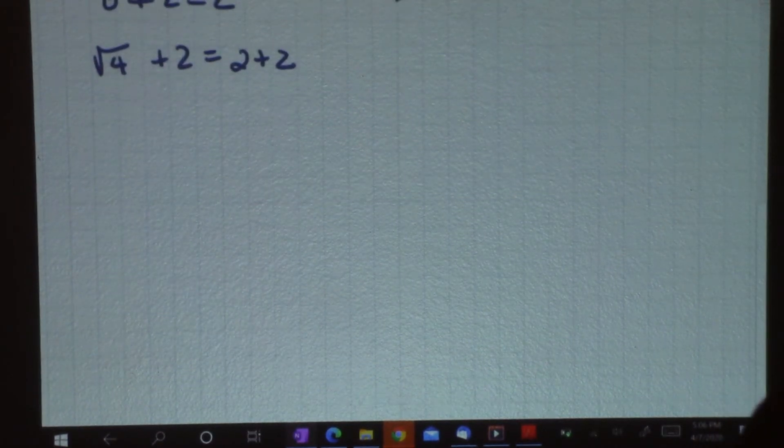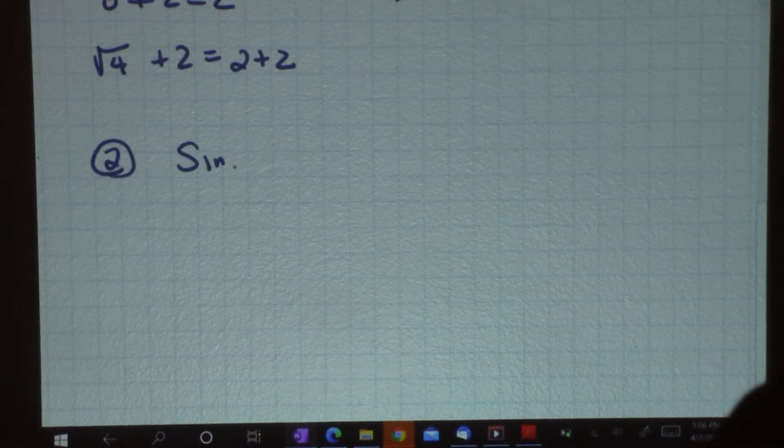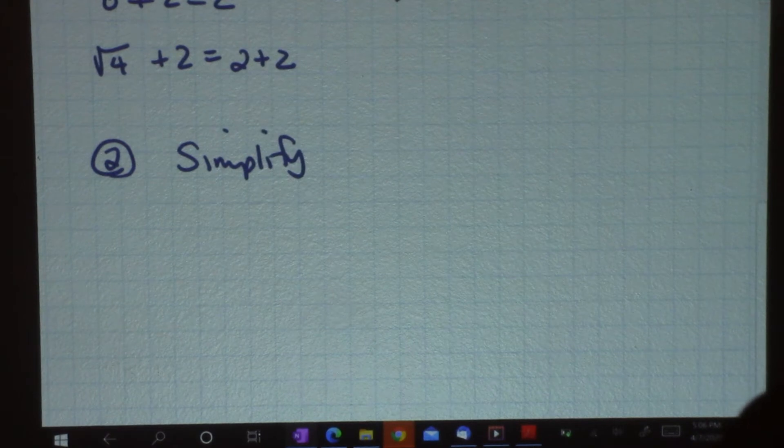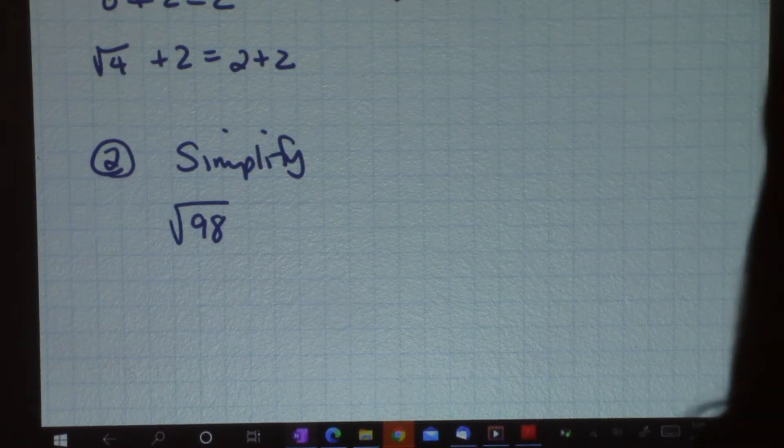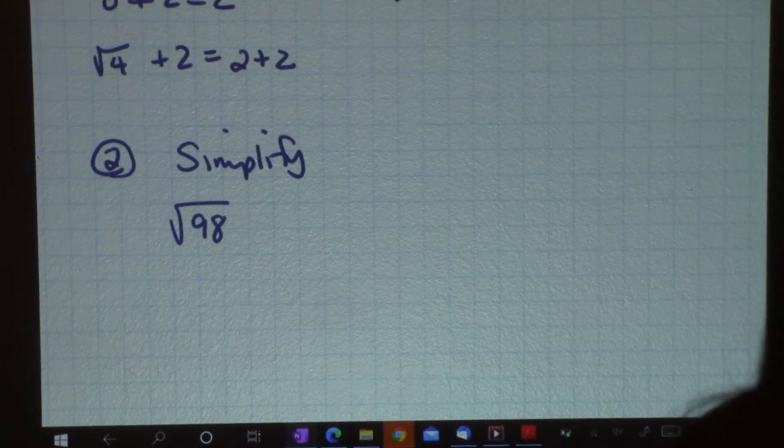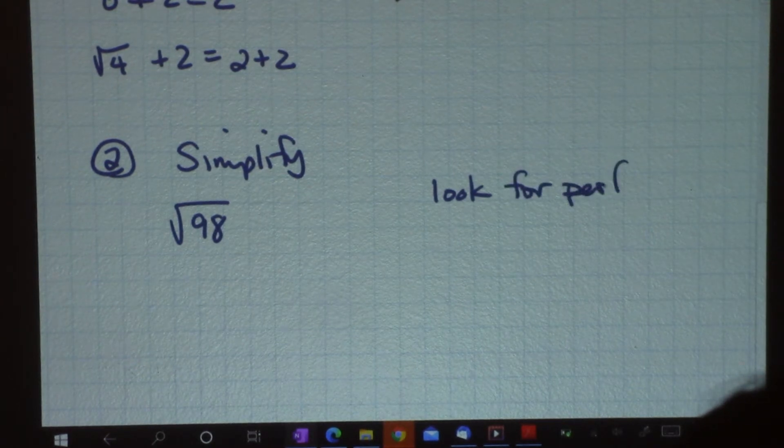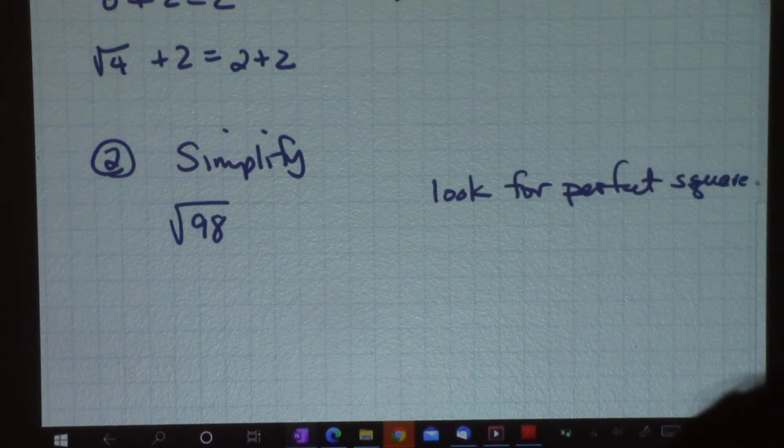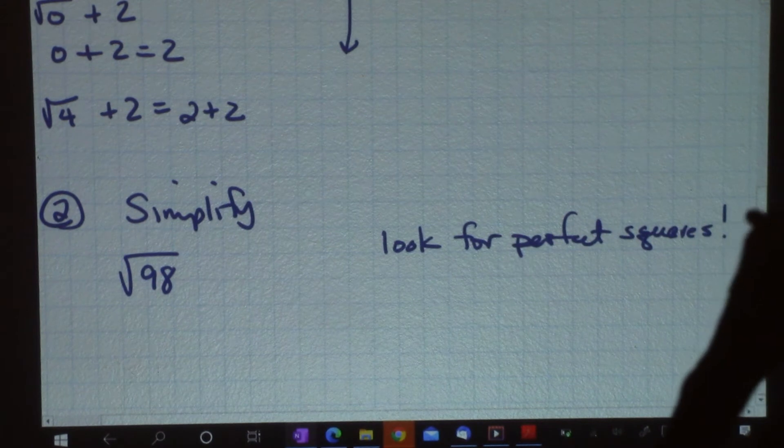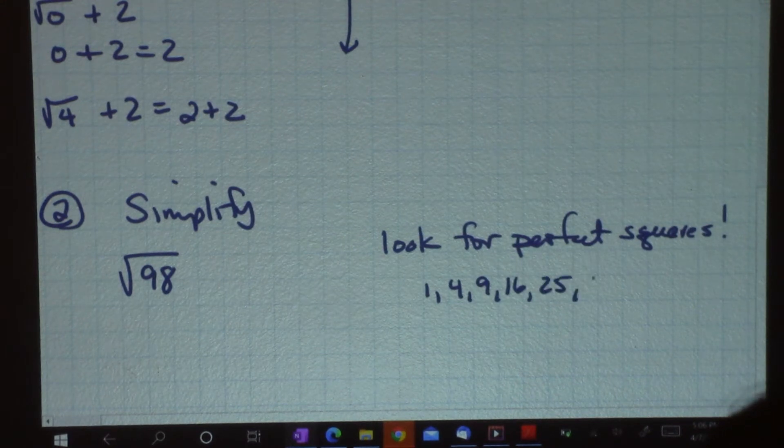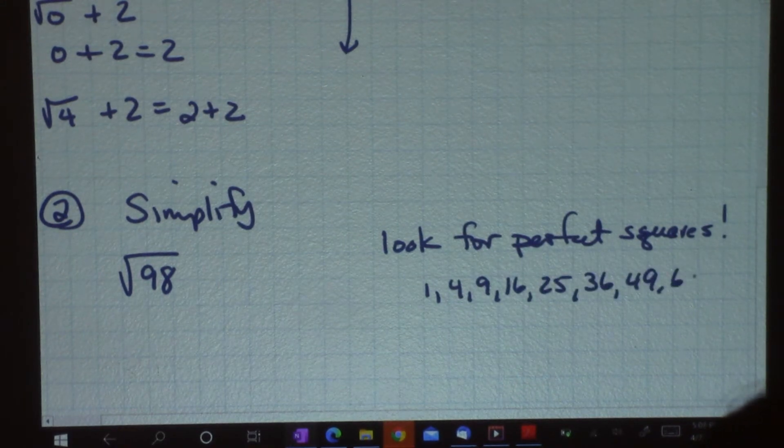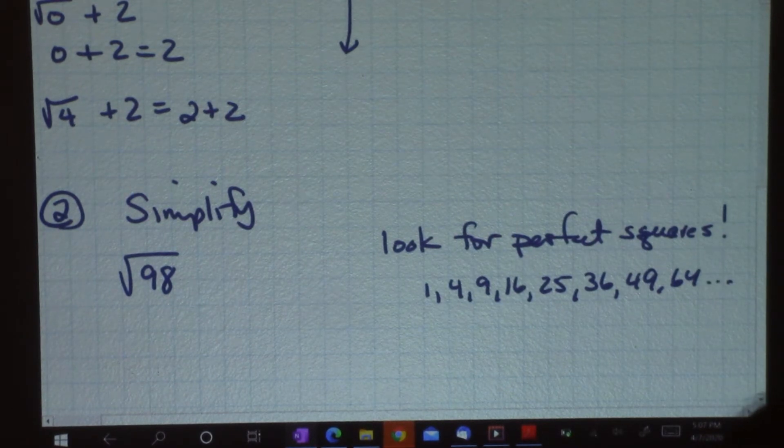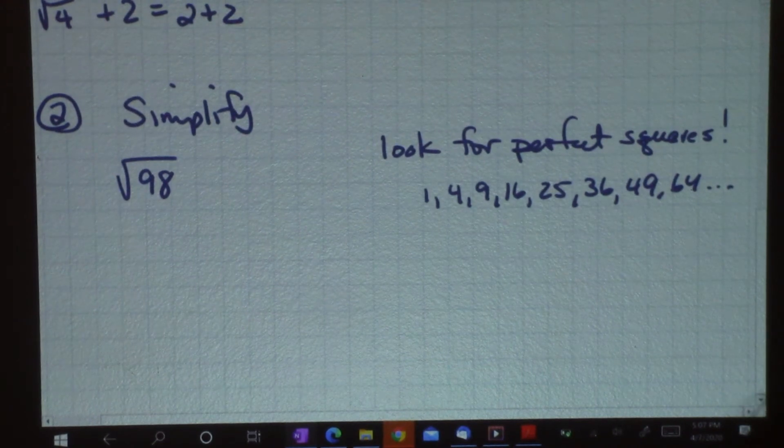Let's keep going and do number two. And that is simplify the square root of 98. So what I want to do is I want to pull out any perfect squares from the square root. So I'm going to look for perfect squares. In doing that, I have to remember my perfect squares, which are 1, 4, 9, 16, 25, 36, 49, 64, and on up.